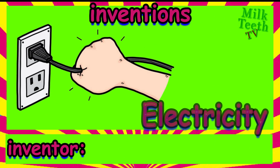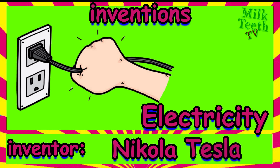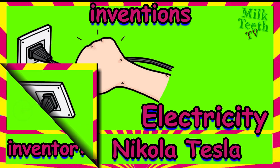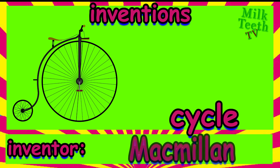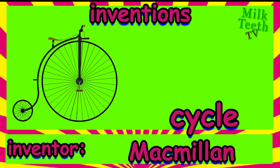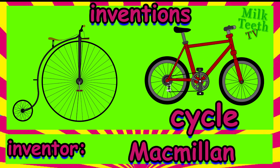Electricity — the most important invention in the history of mankind. If this had not been there, then you wouldn't be able to run any of your gadgets or devices. It was invented by Nikola Tesla. This is a cycle, and all the kids love cycling! It was first invented by Macmillan, and see how it looked — it has now evolved to become the modern bicycle.